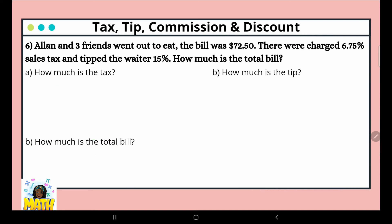Alan and three friends went out to eat. The bill was $72.50. They were charged 6.75% sales tax and tipped the waiter 15%. How much is the total bill? So $72.50 was the total amount, 6.75% was their tax, and 15% was for the waiter. Now, whenever we talk about calculating the tax and the tip, the tip is not calculated including the tax amount. So we have to use $72.50 to calculate each of these portions, and then we will add everything.